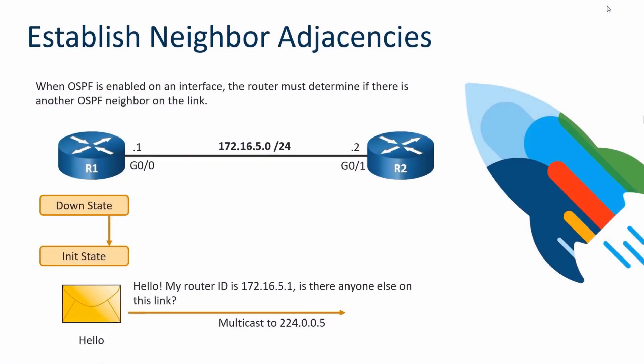When we begin our discussion of OSPF operational states, we need to focus on OSPF activation. OSPF is enabled on an interface, and when it is, the router must determine if there's another OSPF neighbor on that same link. We start in the Down state, and when we send a Hello, we begin to initialize, saying hello to a multicast target of 224.0.0.5.